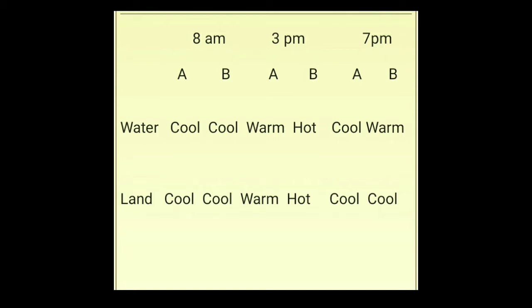At 8 am in the morning when you kept the pots, the water inside is cool as well as outside is also cool. At 3 o'clock, when you touch the water inside the house, it has become slightly warm, but the water kept in the sun has become hot. Again at 7 o'clock when you touched the water, the water kept inside has become cool, but the water kept outside is still warm — the one which turned hot in the afternoon is still warm in the evening.